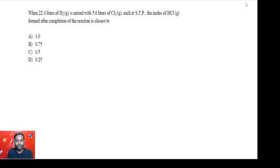Simply you have to write the reaction and balance it. So H2 gas plus Cl2 gas giving HCl gas. After balancing it will be H2 plus Cl2 giving 2HCl. They have taken 22.4 liters of hydrogen at STP and 5.6 liters of chlorine at STP.